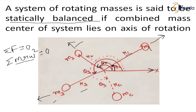The point masses we are denoting can represent anything in a machine — they can be turbine plates, discs, or if we divide a rotor into n number of disks, they may represent any rotating mass in the system.